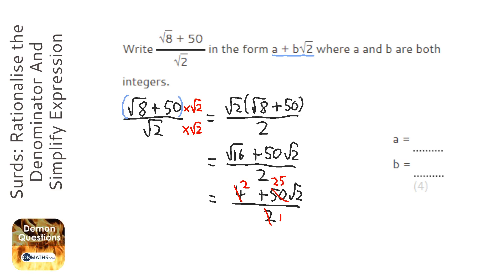So that gives us 2 plus 25 root 2, so our a value is 2, and our b value is 25.